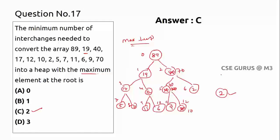After extracting 89 (placed at last index 12), the last element 10 replaces the root. Now heapify: compare 10, 19, and 70 — highest is 70, so 70 comes up, 10 goes down. Then compare 10 with 40 — 40 is higher, so 40 comes up, 10 goes down.